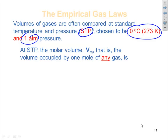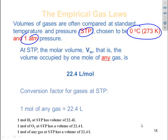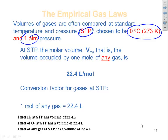At STP, the molar volume — that is, the volume occupied by one mole of any gas — doesn't matter what it is, is 22.4 liters per mole. This is a conversion factor for gases at STP. So one mole of any gas has a volume of 22.4 liters.